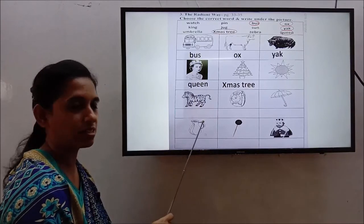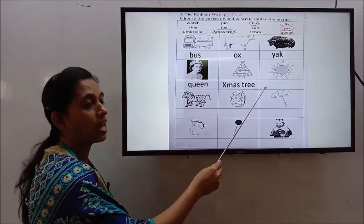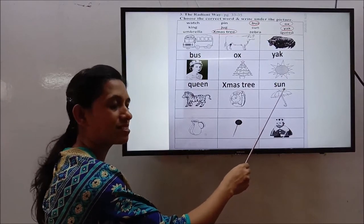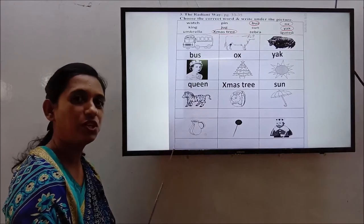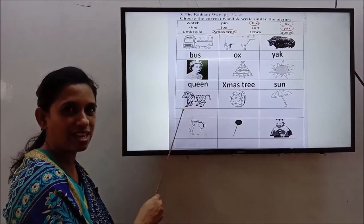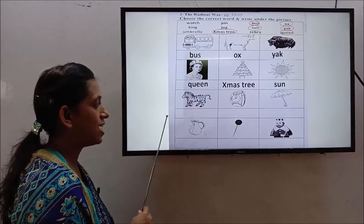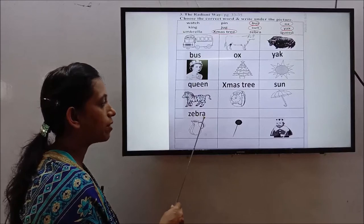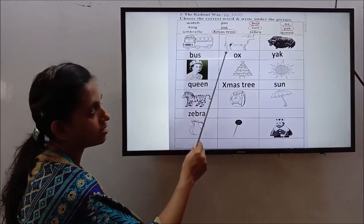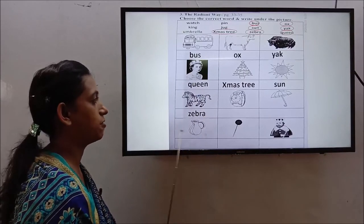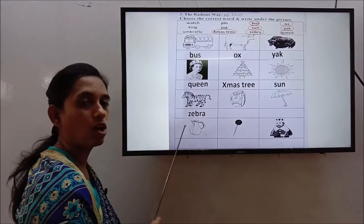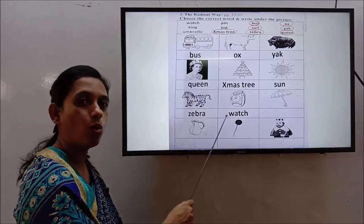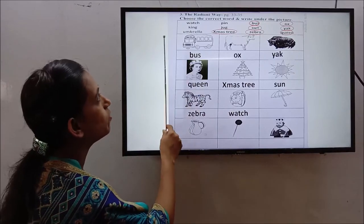So, let's circle this. Now, can you tell me what is this one? Sun. S-U-N. Sun. Can you tell me what is this animal? Yes, zebra. So let's circle zebra there. Okay, now next one, watch.